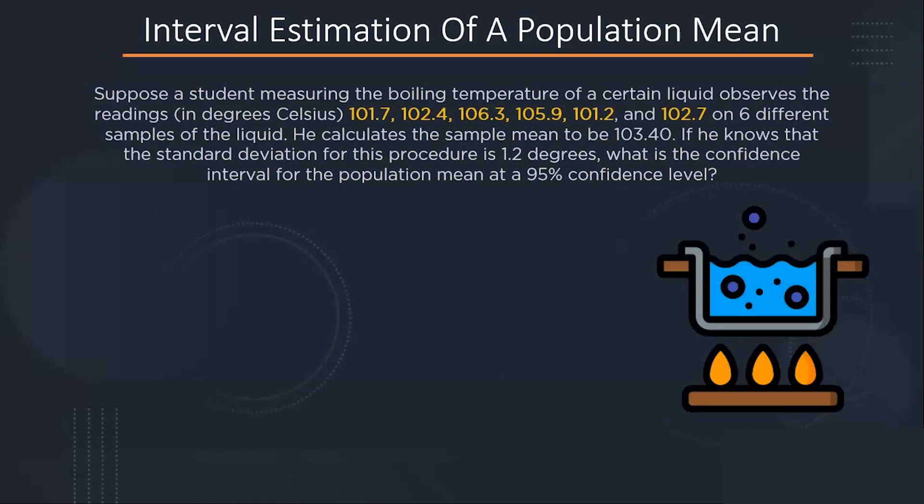Suppose a student measuring the boiling temperature of a certain liquid observes the readings on six different samples of the liquid. He calculates the sample mean to be 103.4, and if he knows that the standard deviation of this procedure is 1.2 degrees, we have to calculate the confidence interval of the population mean at a 95 percent confidence interval.